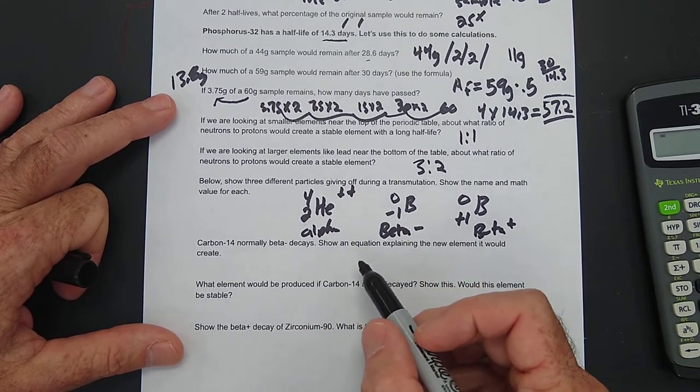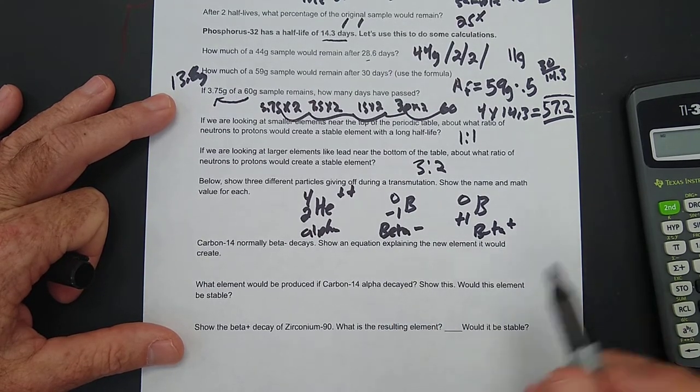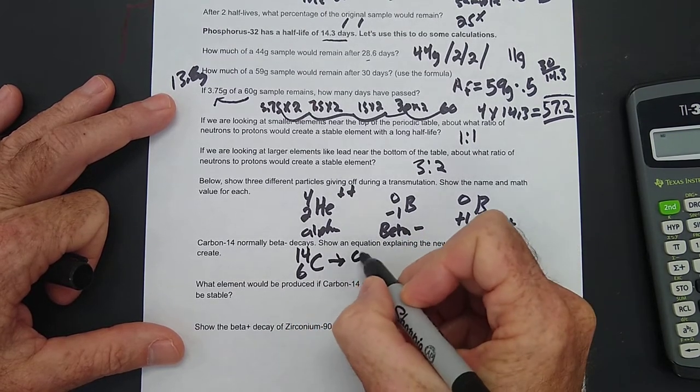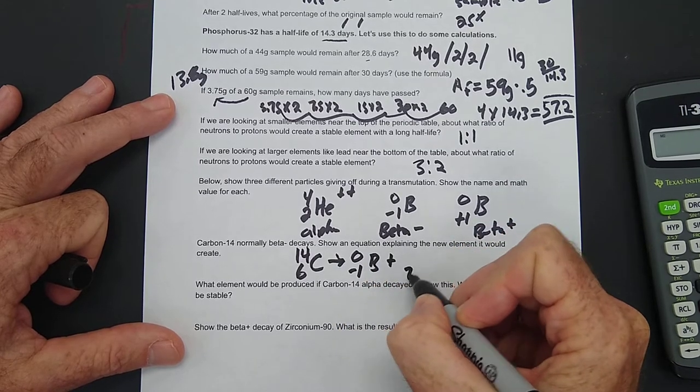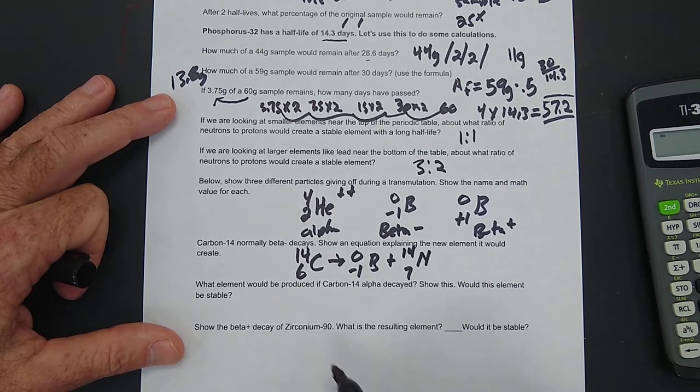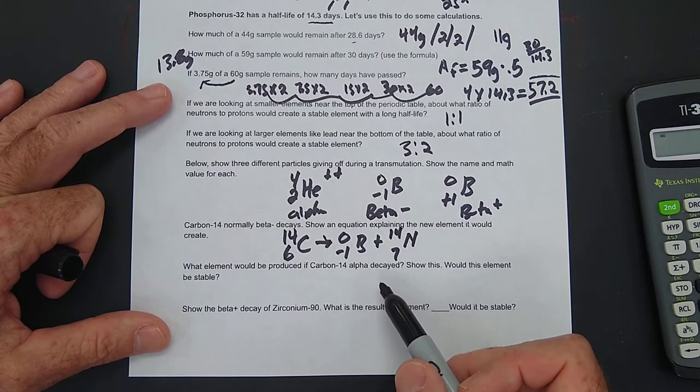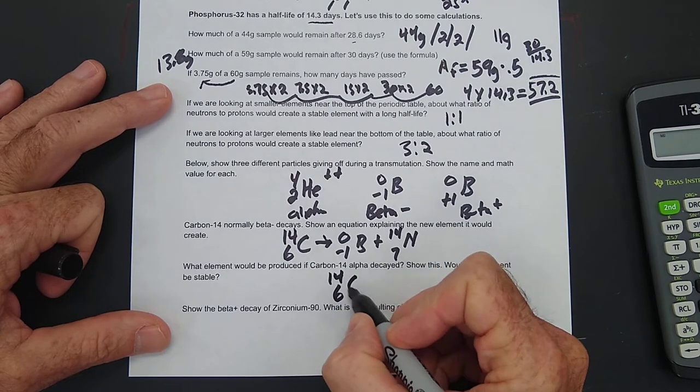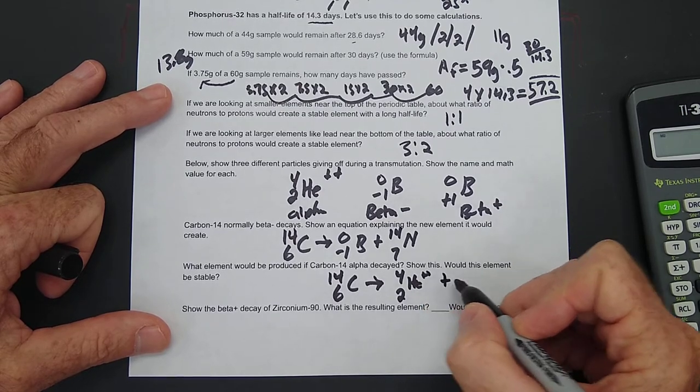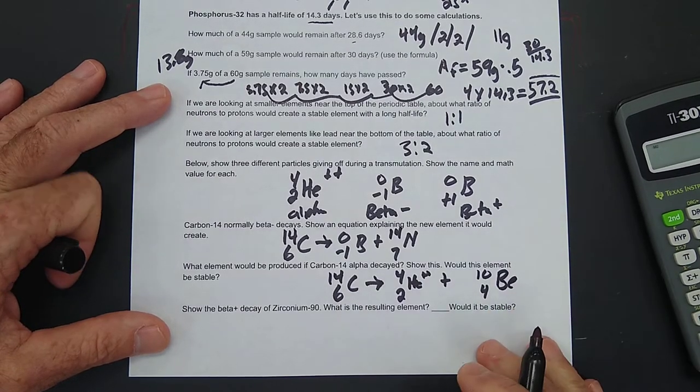Carbon-14 normally beta decays. Show an equation explaining the new element it would create. So I'll ask you, what would it create? All right. Let's see if you got it right. 14 over 6 C. What element would be produced if carbon-14 alpha decayed? Okay. 14 over 6 C with alpha decay into 4 over 2 helium plus plus, and let's see, 10 over 4 beryllium. So beryllium 10.